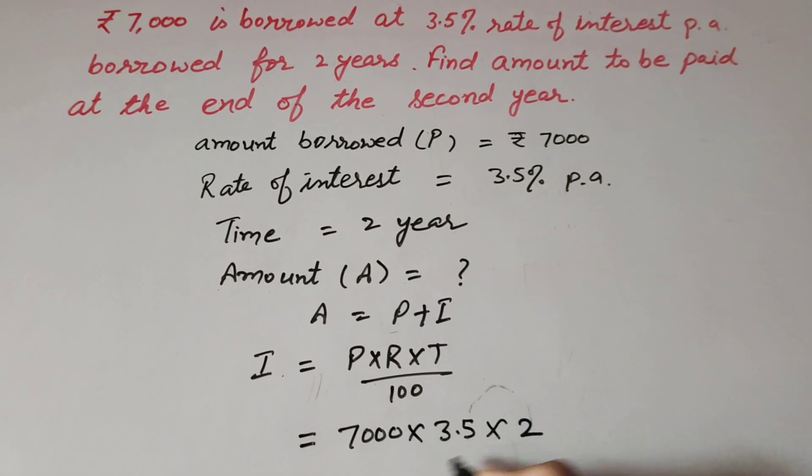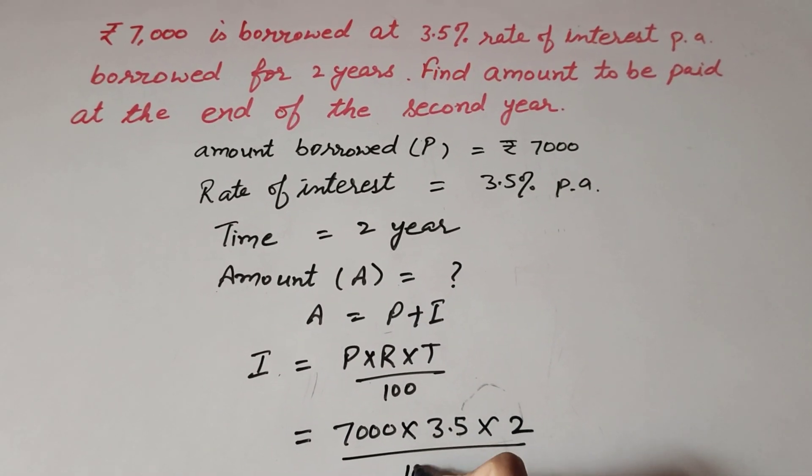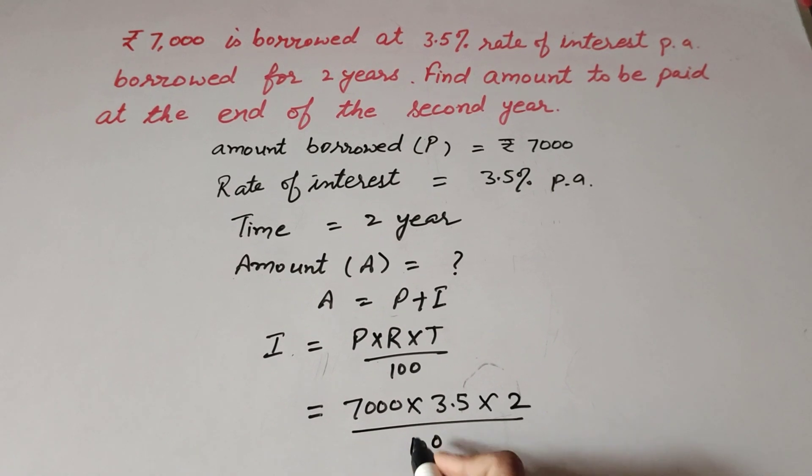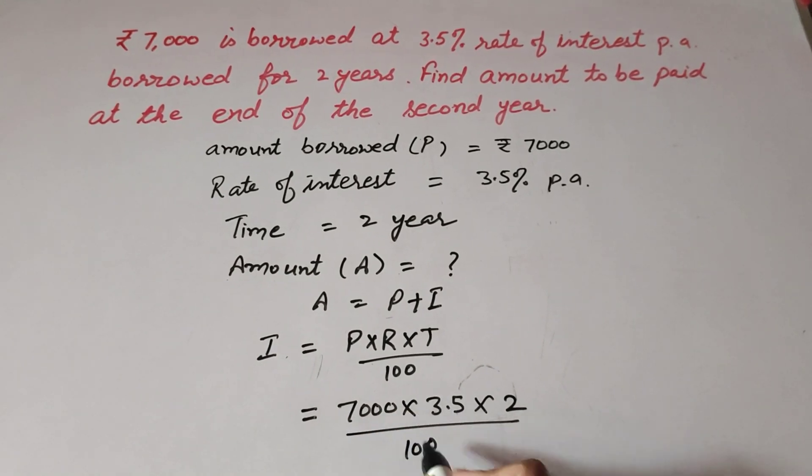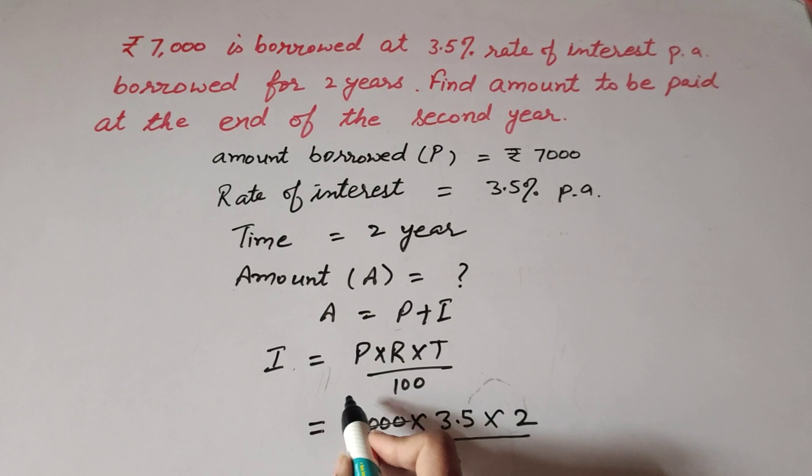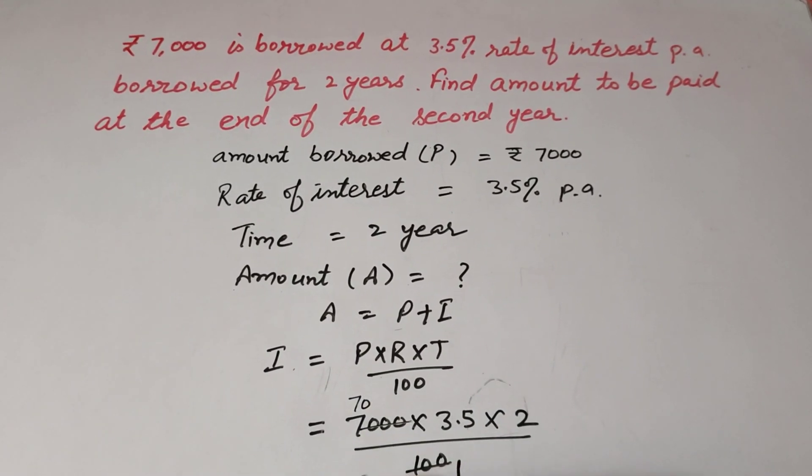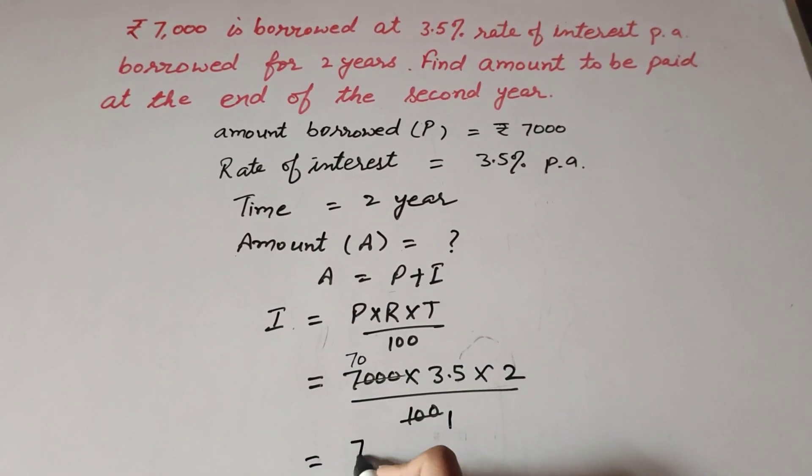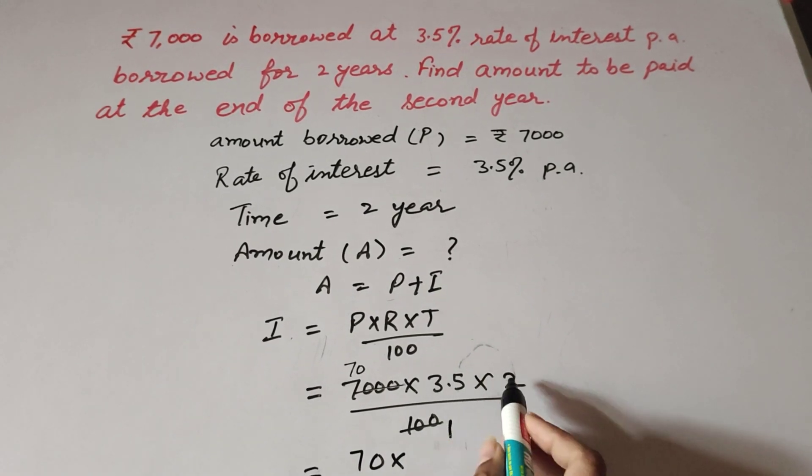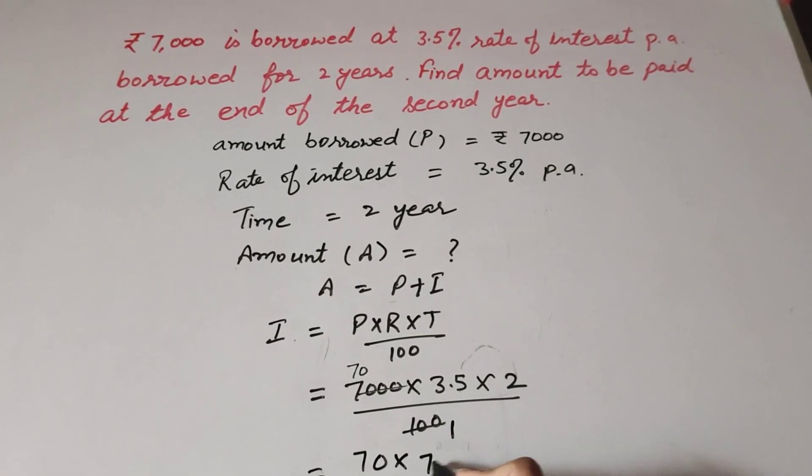7000 and 100 are both divisible by 100, so we cancel them: 7000/100 = 70. So it equals 70 × 3.5 × 2, which equals 70 × 7.0.